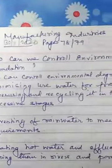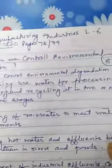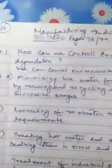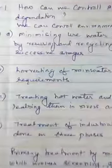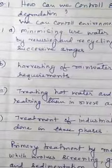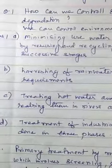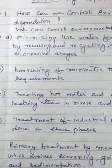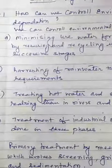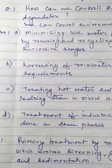Number A: minimizing use of water for processing by reusing and recycling it in two or more successive stages. Number B: harvesting of rainwater to meet water requirements — collecting rooftop water and allowing it through a pipe to be collected in underground water. That is rainwater harvesting.